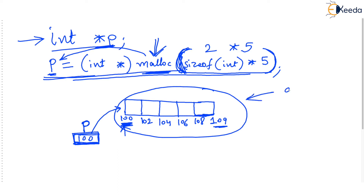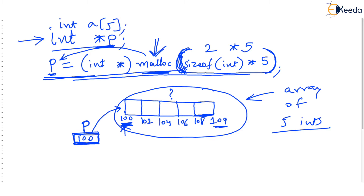So isn't this an array? Yes, it is an array of five integers. But check one very important thing: there is no name to this array. Usually we declare an array like int a[5], and then a is the name of the array. But even when you declare an array like that, a is a pointer to the array — it stores the base address. So we still have a pointer to this array. p is a pointer to this array, and p stores the base address of the array.